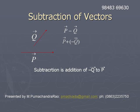So, take minus q̄ and add minus q̄ to p̄, then we will get the vector p̄ minus q̄.